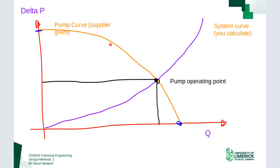You operate in between those two extremes, giving the characteristic curve shape — typically for a centrifugal pump. There are two other pump types: axial and positive displacement, which we'll talk about at the end. We're going to focus initially on the centrifugal pump because that's the most common one used.